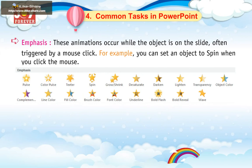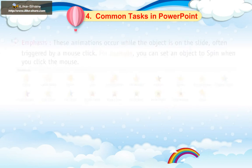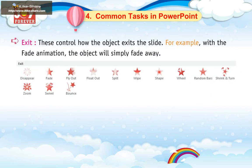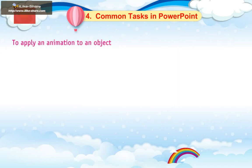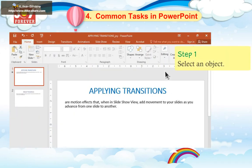Emphasis: these animations occur while the object is still on the slide, often triggered by a mouse click. For example, you can set an object to spin when you click the mouse. Exit: these control how the object exits the slide. For example, with the fade animation, the object will simply fade away. Motion Paths: these are similar to emphasis effects except that the object moves within the slide along a predetermined path, like a circle.